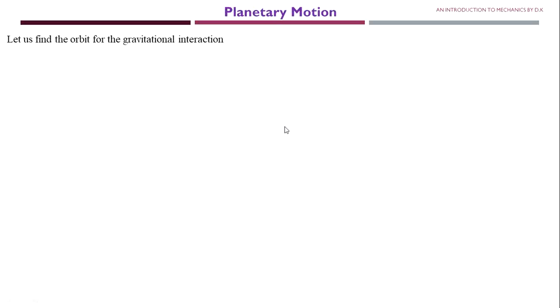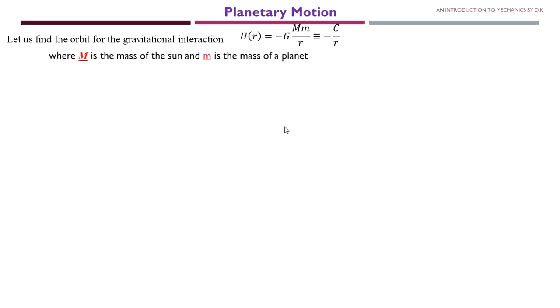Dear students, welcome to another class of mechanics. Today we are going to discuss planetary motion. Let us find the orbit for the gravitational interaction. As we know, the potential energy E(r) is equal to minus G times capital M times small m divided by r, which is approximately equal to minus c divided by r, where capital M is the mass of the Sun and small m is the mass of a planet. Alternatively, capital M could be the mass of a planet and small m the mass of a satellite.